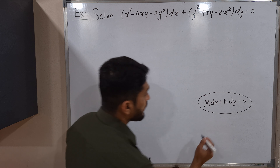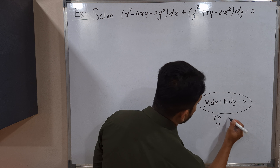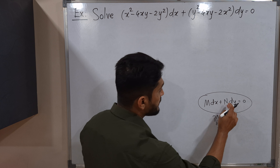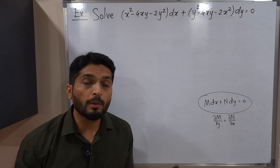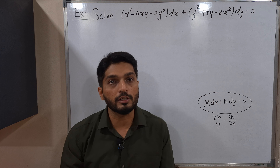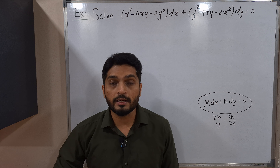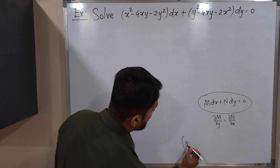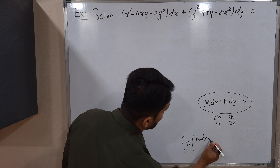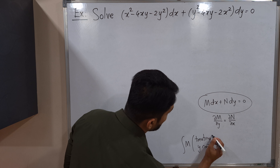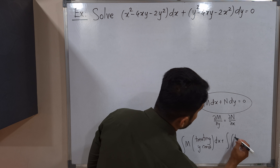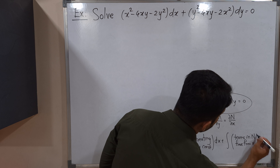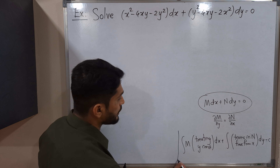If ∂M/∂y equals ∂N/∂x — that is, the partial derivative of M with respect to y equals the partial derivative of N with respect to x — then the differential equation is exact. The solution formula is: ∫M dx (treating y constant) + ∫(terms in N free from x) dy = c.